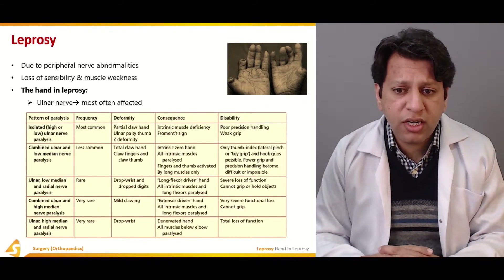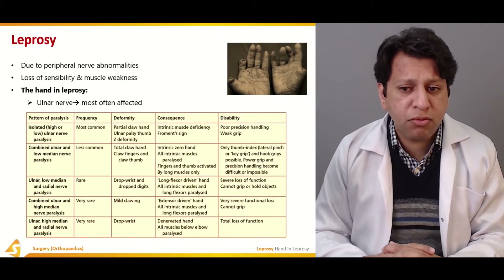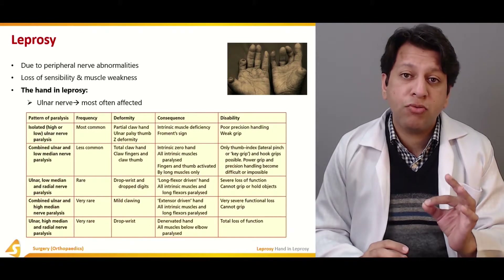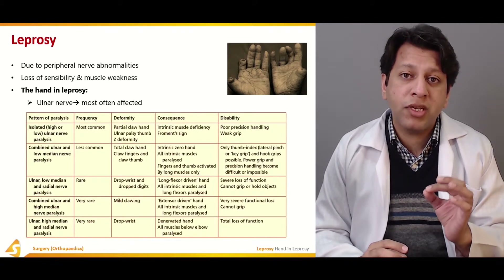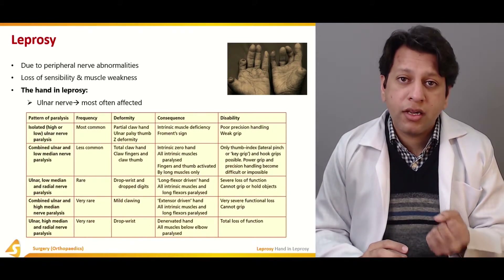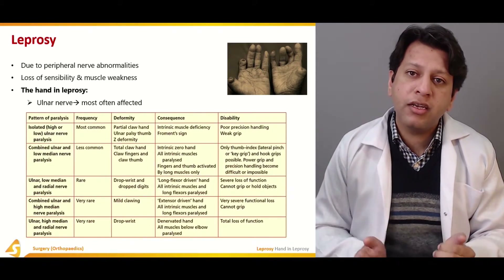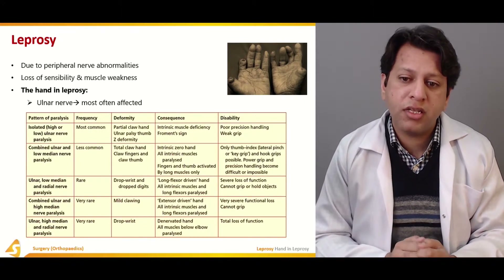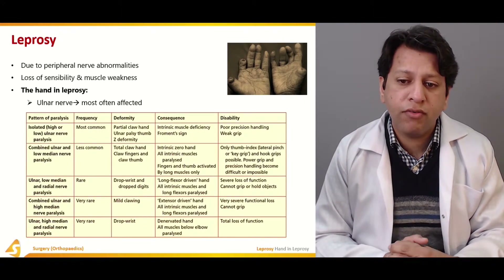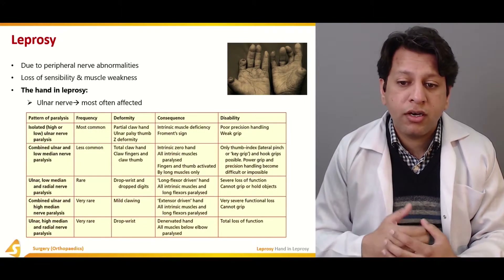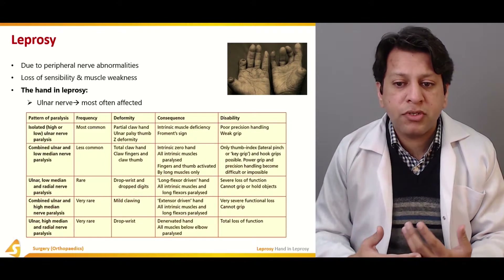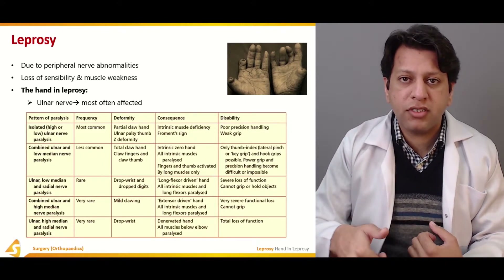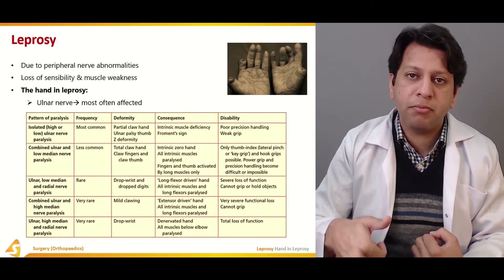With combined ulnar and median nerve damage, the patient cannot pinch or grip properly. However, some degree of power grip and precision grip is still possible — the patient is able to carry a briefcase with this maneuver.